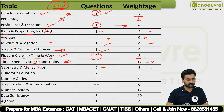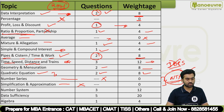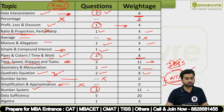Geometry and Mensuration had 2 questions for 8 marks. Quadratic Equations had 2 questions for 8 marks. Number System had 3 questions for 12 marks. Since NTA sets the paper, Number Series and Simplification/Approximation appear very rarely.